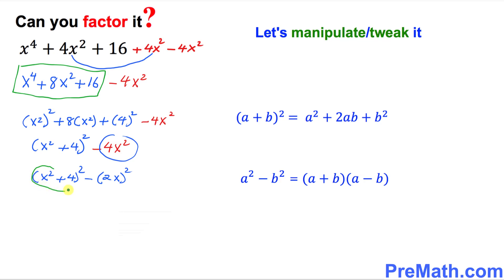We are going to use the formula which says the difference of two squares equals the product of the sum and the difference. I want to call this whole part a and this part b, then apply that formula.